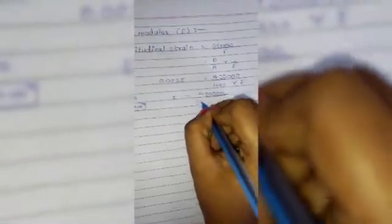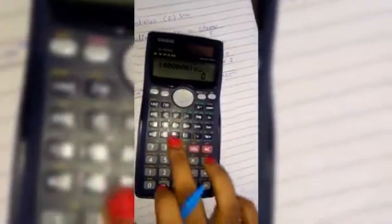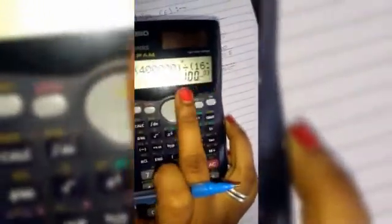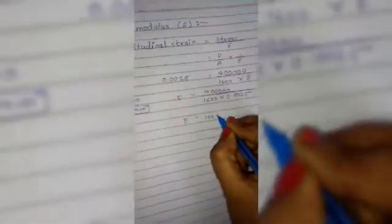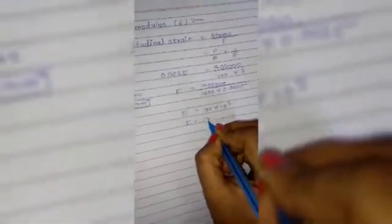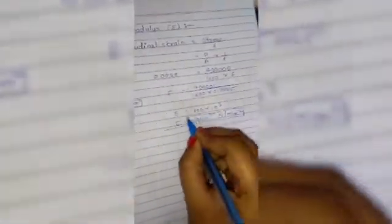Then E equals to 1600. Now, calculate with the help of calculator. 400,000 divided by 1600. Multiply by 0.0025. We get answer. 100. And it is 100 into 10³. To convert the units. That is, look at here. 100 multiply by 10³. Which is equal to 1 × 10⁵ Newton per mm². Which we have to find out.